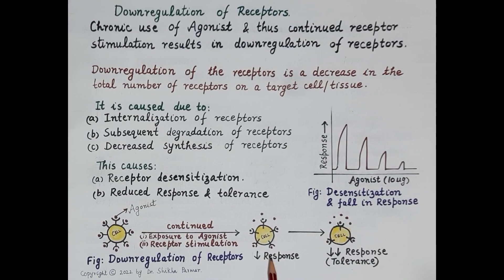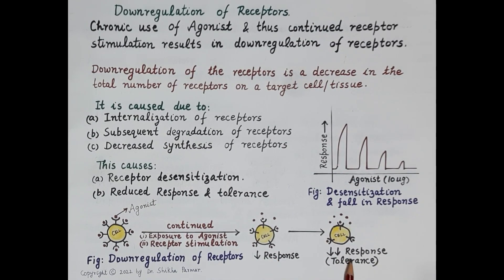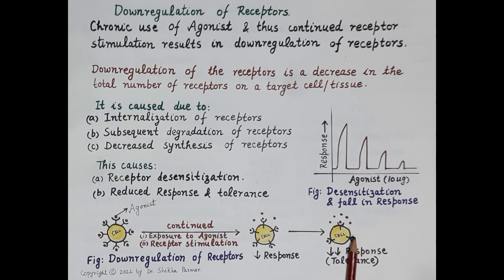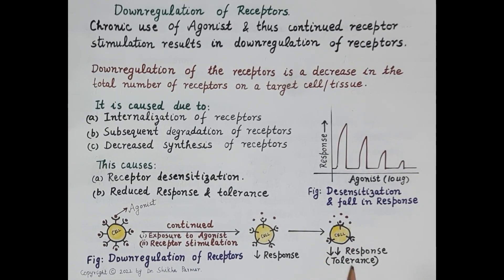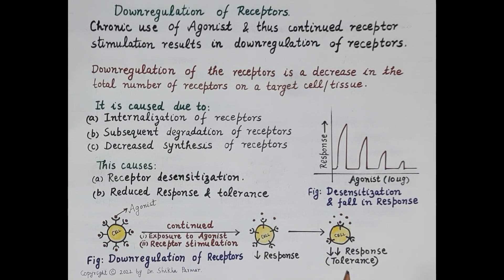Over a period of time, the response of the drug will further reduce and the dose that was effective earlier will now become ineffective, as the number of receptors has further reduced. Drug molecules go to waste as no receptors are available to bind and produce a response. This causes a further fall in response and the development of tolerance — tolerance refers to the decreased effect of a drug over time.